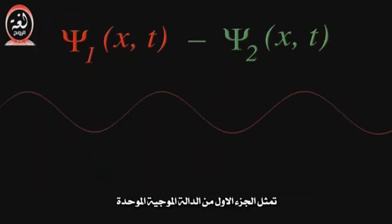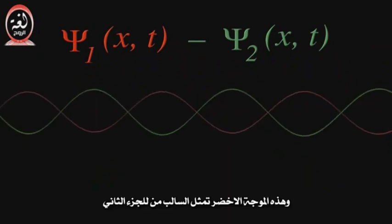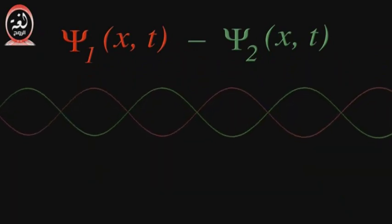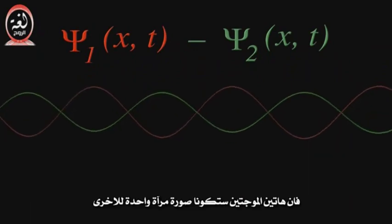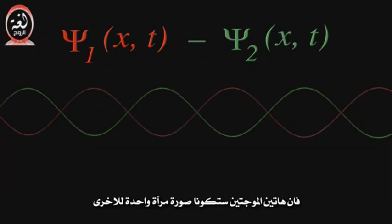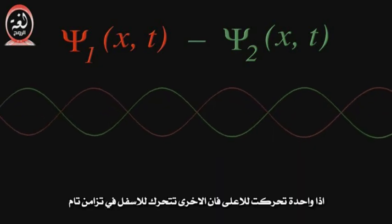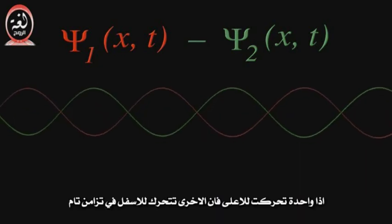Let's let this red wave represent the first part of the combined wave function, and this green wave represents the negative of the second part. If the electrons are in the same state, these two waves will be a mirror image of one another — as one goes up, the other goes down in perfect synchrony.